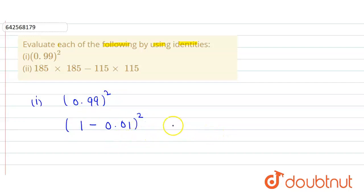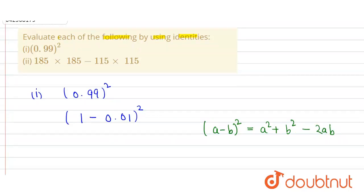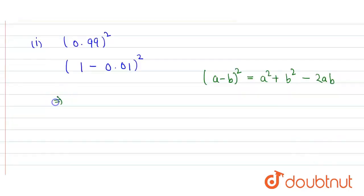Now we use the algebraic identity according to which (a - b)² = a² + b² - 2ab. We use that, so here this part is a and this part is b.